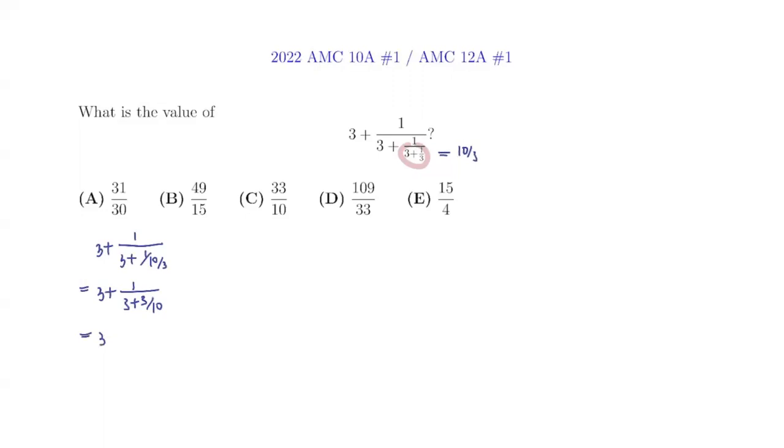Our overall expression has 3 plus 1 over 33 over 10. Now finding the reciprocal of 33 over 10 is 10 over 33, so we have 3 plus 10 over 33.